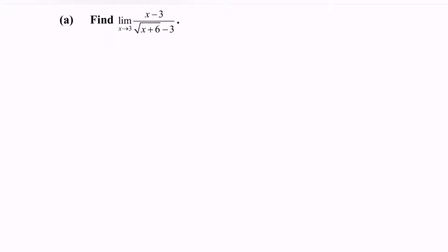Hi everyone, welcome to my channel. Today I'm going to discuss an example for limits. We have the situation: find the limit as x approaches 3 for the function (x minus 3) over (square root of x plus 6, minus 3). First, what we have to do is substitute the value of 3 into the function, and we will obtain 0.